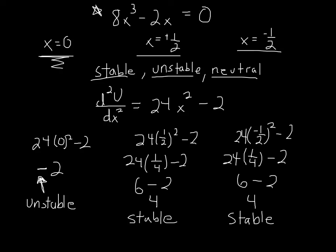So what I did here to figure out if my equilibrium points are stable, unstable, or neutral: I take the second derivative of my original energy function, plug in all my equilibrium points, and see if the result is positive or negative. If it's negative, then I'm unstable. If it's positive, then I'm stable. Which begs the question — how do I know if I'm neutral? This occurs when your second derivative is equal to 0.